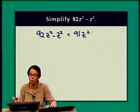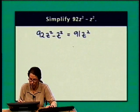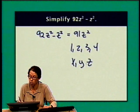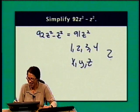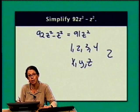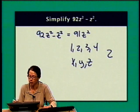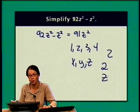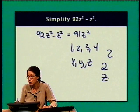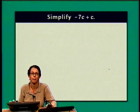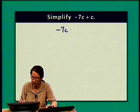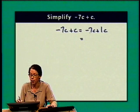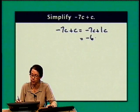Let's simplify 92z squared minus z squared. I have 92z squared and I'm taking away 1z squared, leaving 91z squared. A quick note about writing z's in algebra: without putting a line through the z, it can look very much like a 2. So I put a line through the z to distinguish it from a 2. For negative 7c plus c, that's negative 7c plus 1c, and adding negative 7 plus 1 gives negative 6c.